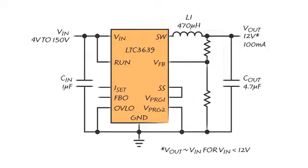If we wanted to limit the output current to between 10 milliamps and 100 milliamps, a resistor could be placed on the ISET pin to reduce the current.